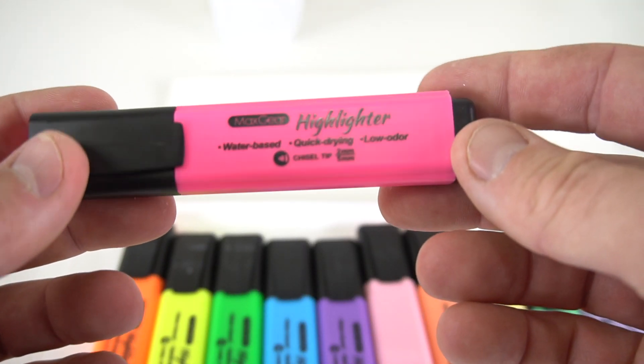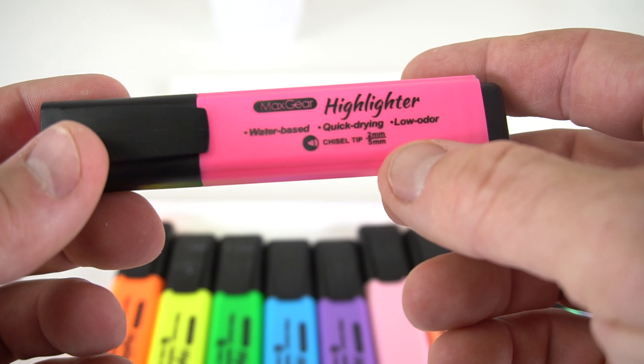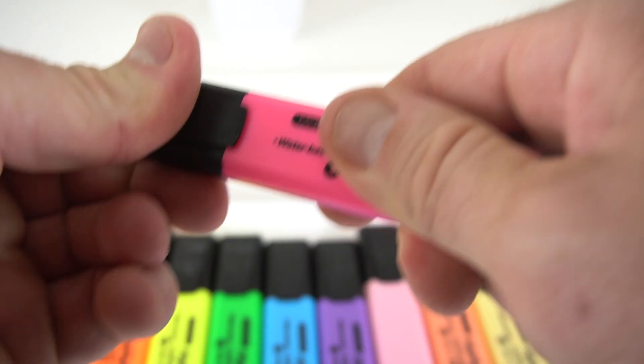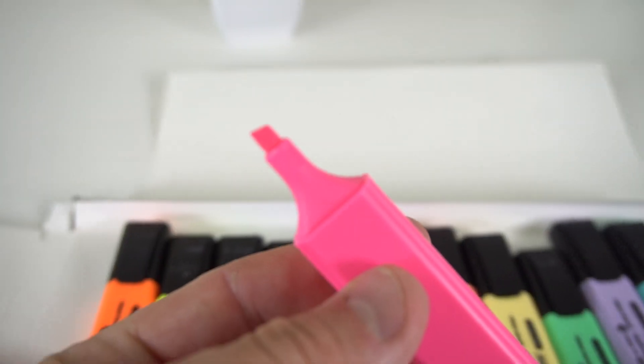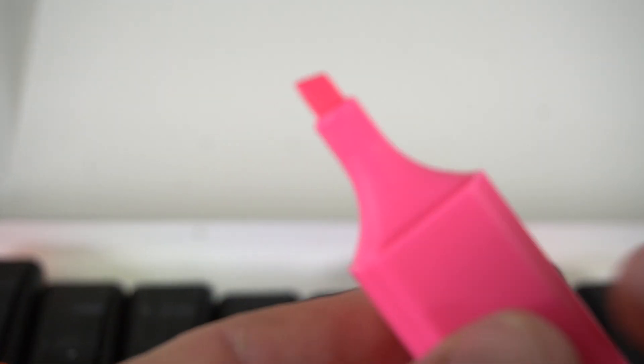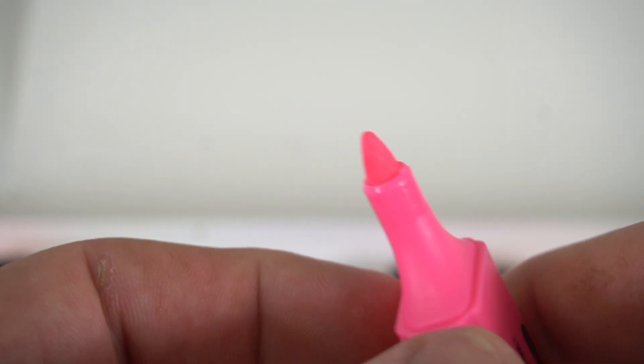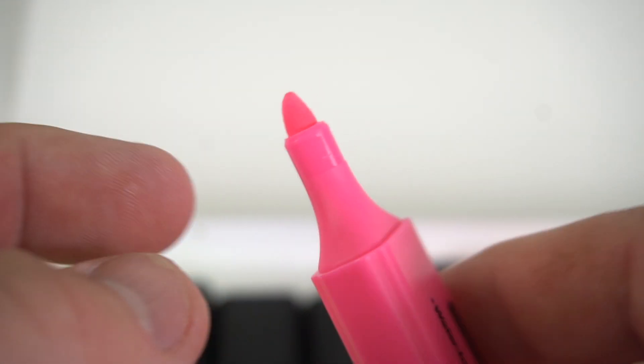Here's the pink one, water-based quick-drying. It has the chisel tip, 2 millimeter and 5 millimeter. So that's what the tip looks like. Let's zoom in just a little bit so you can see. So very fine on the end, and then if you want to use the wide part, it would be like that. So there is the pink.